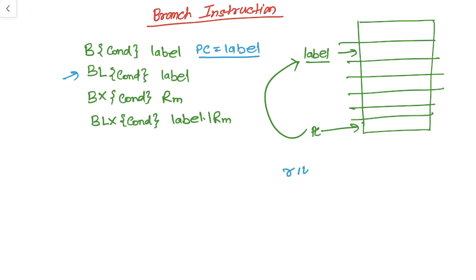If we write BL and a label, you might have noticed when we were discussing general purpose registers and special function registers that R14 was the link register. So the link register — what it does is it first stores the current PC into the link register, and then it jumps to the label. So what happens when we write BL?